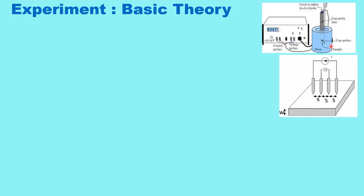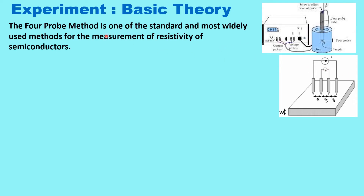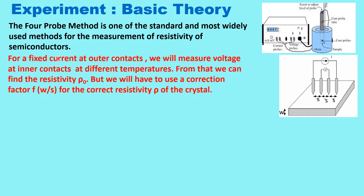In this experiment we will measure the resistivity of a sample inside an oven and by changing the temperature the resistivity will change, and from that we can find out the band gap of the semiconductor. Four probe method is one of the standard and widely used methods for the accurate measurement of resistivity of semiconductors. We will pass a fixed current using the outer contacts and measure the voltage using the inner contacts with variation in temperature.